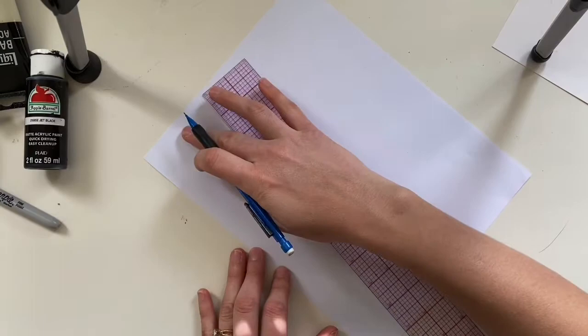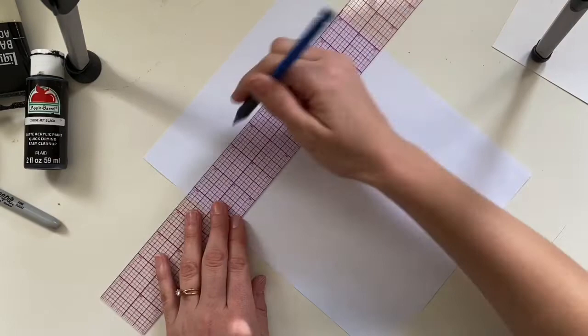So the first thing we need to do is we need to get our piece of paper, our ruler and our pencil, and we need to make notches on both sides of our paper so that we can create nice even lines.